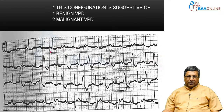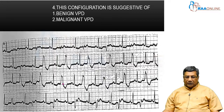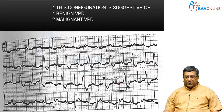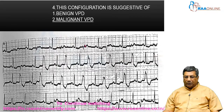Now we have shown you the configuration. We are looking at the configuration of the VPDs. The VPDs are wide, and you have multiple notches — you can see the multiple notches there. This configuration of the VPDs is suggestive of a malignant VPD, because you can see very small multiple notches in the VPDs. Small, broad VPDs are malignant.